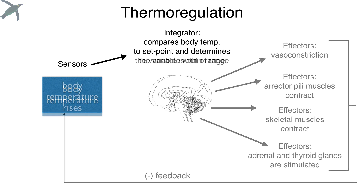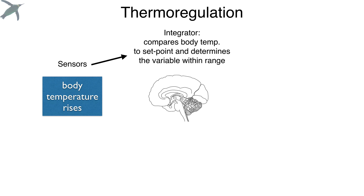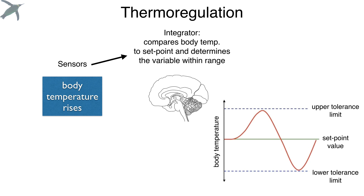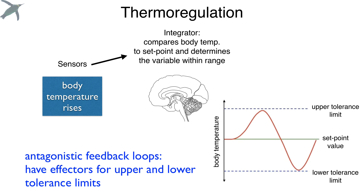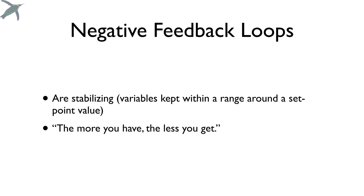As the body temperature goes up, the sensors sense that, and the integrator gets that information and shuts down all of the body-warming processes it had turned on. So variables oscillate between upper and lower tolerance limits around a set point value. We call this antagonistic negative feedback control because it's controlled on both the upper and lower limits. Negative feedback loops are stabilizing: the more you have, the less you get.